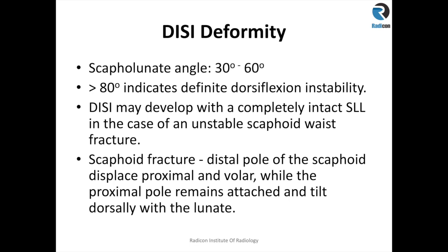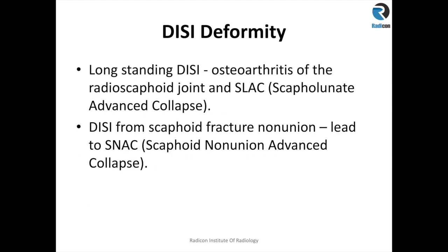DISI deformity can also occur with an intact scapholunate ligament in the presence of a scaphoid waist fracture. The distal pole of the scaphoid displaces proximally and volarly, while the proximal pole remains attached and tilted dorsally by the lunate. If left untreated, this can lead in the long term to osteoarthritis of the radioscaphoid joint and SLAC wrist (scaphoid lunate advanced collapse). DISI deformity due to scaphoid fracture is called SNAC wrist — scaphoid nonunion advanced collapse.